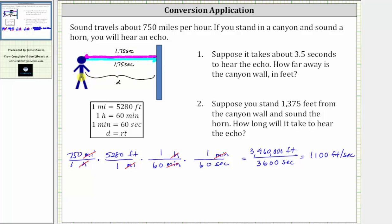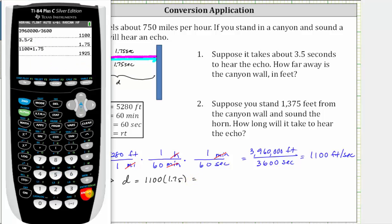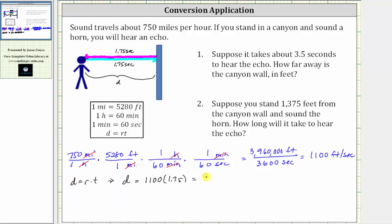To find the distance d, which is just one way, we use a time of 1.75 seconds — half of 3.5 seconds. Using the formula distance equals rate times time, the distance d equals the rate of 1,100 feet per second times the time of 1.75 seconds, which equals 1,925 feet. So for number one, the canyon wall is 1,925 feet away.